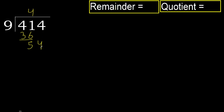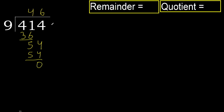Next digit: 54. 9 multiplied by 6 is 54, which is not greater. Subtract: 54 minus 54 is 0. There is no next digit, therefore we finish.